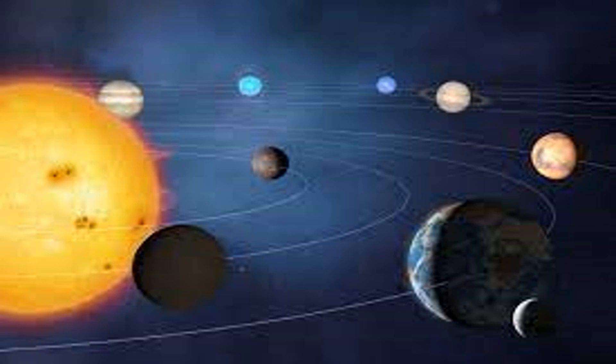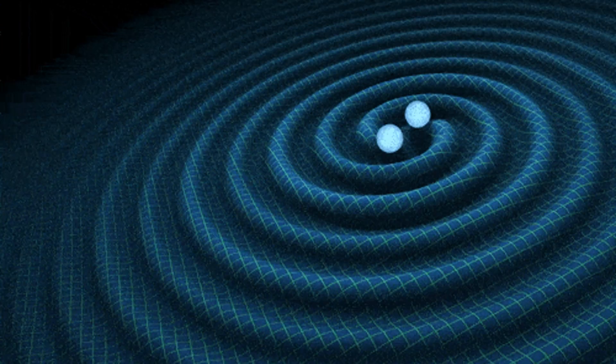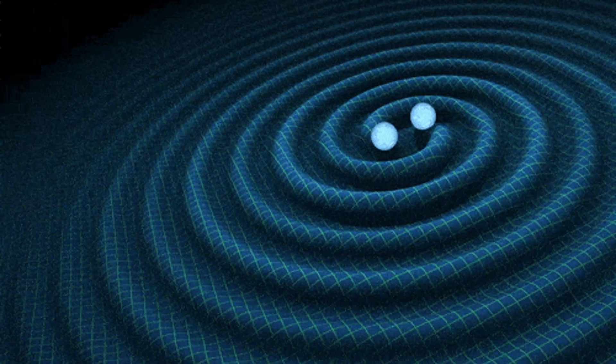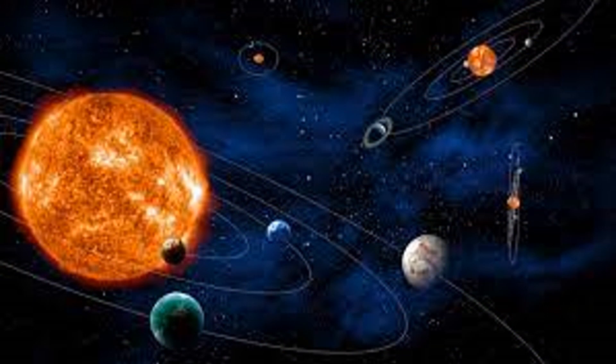General relativity tells us that any accelerating mass loses energy in the form of gravitational waves. This means that the planets should also lose energy and spiral into their star, just like it is supposed that electrons will lose energy and spiral into the nucleus. But we see that that doesn't happen to planets, so why should we think that it happens to electrons?